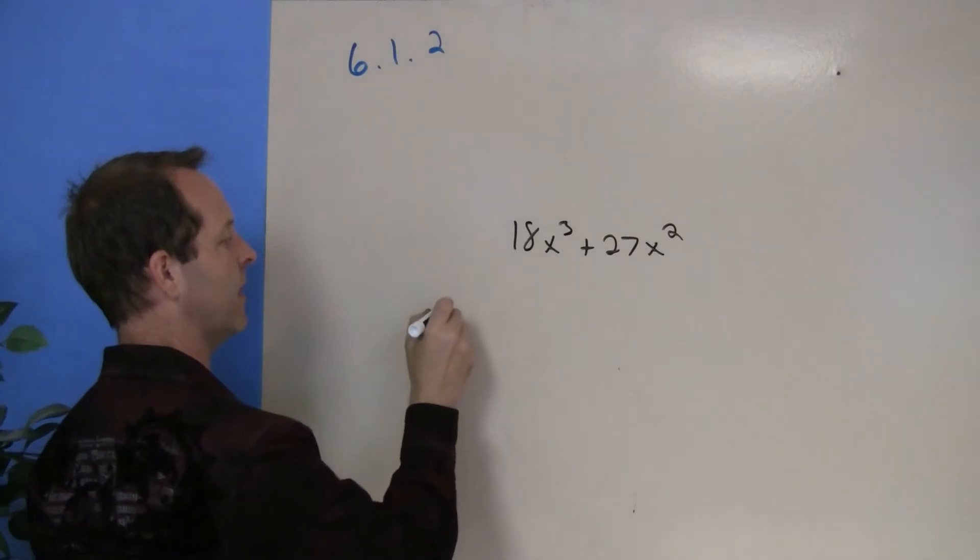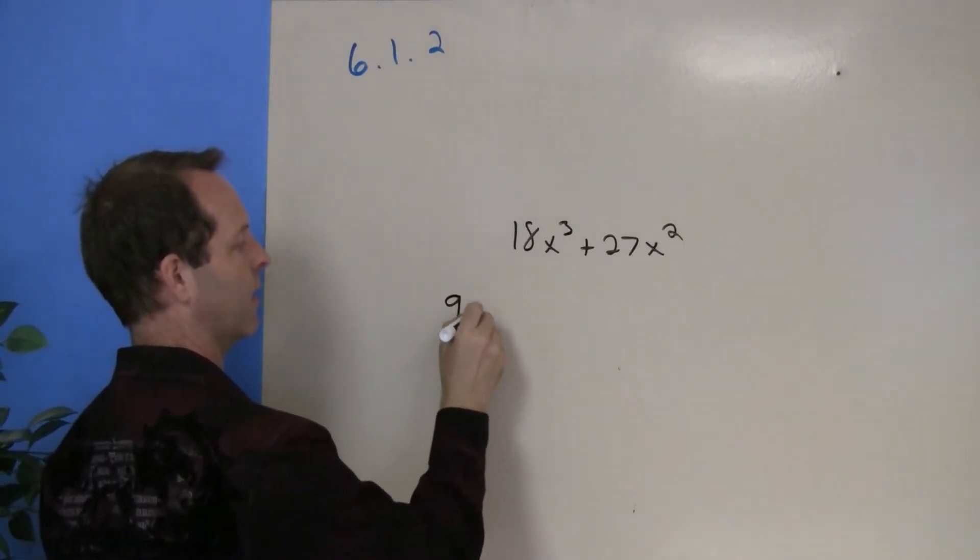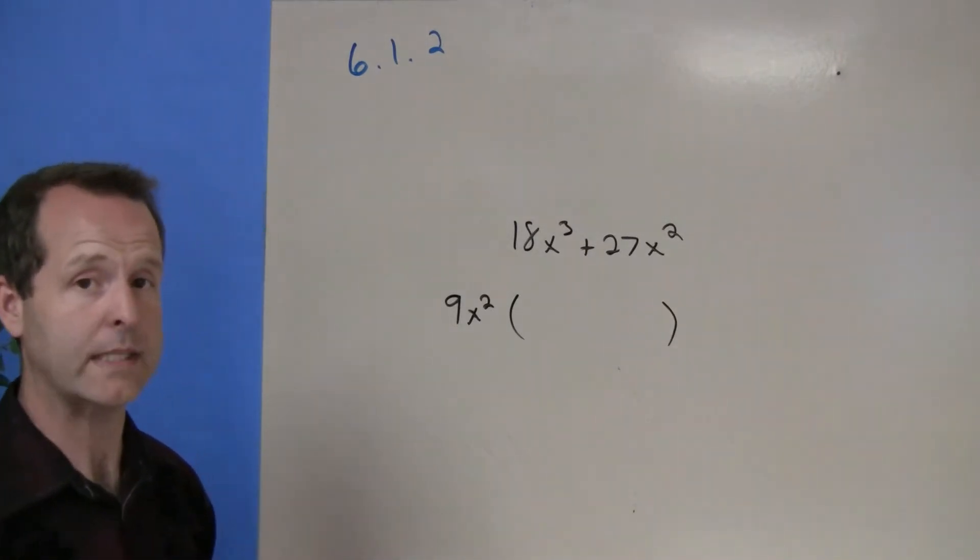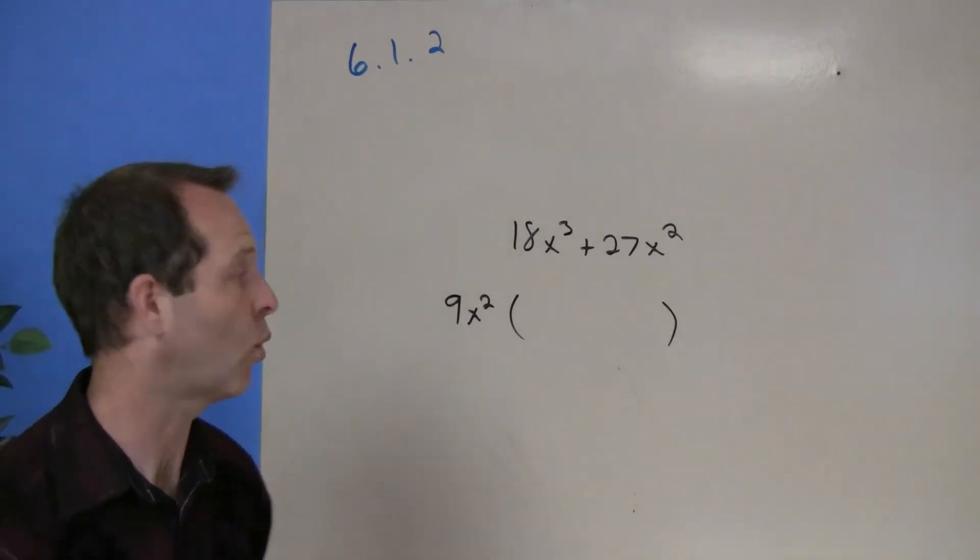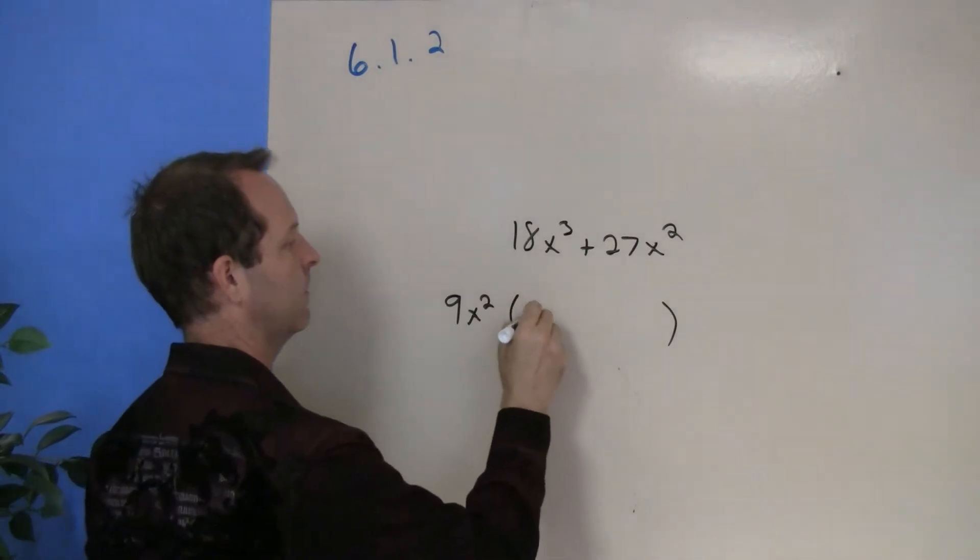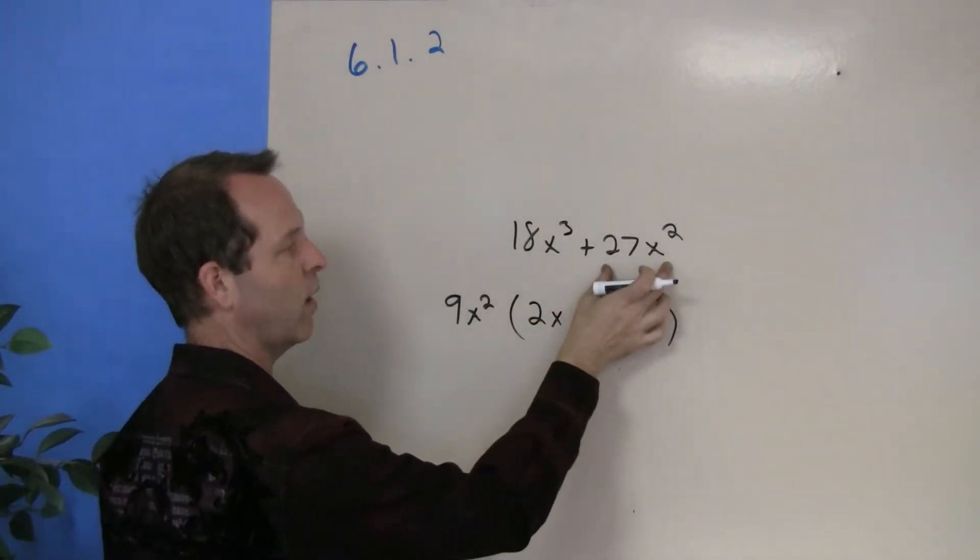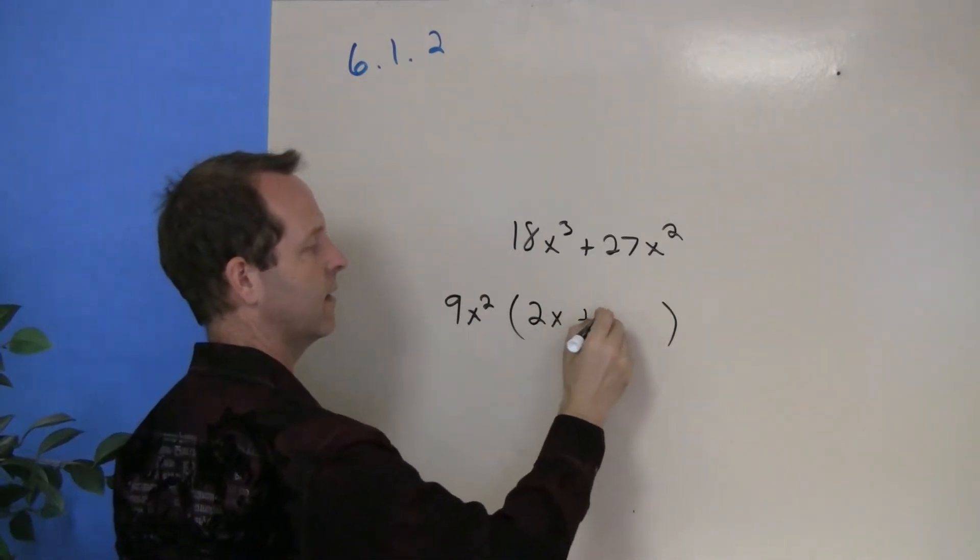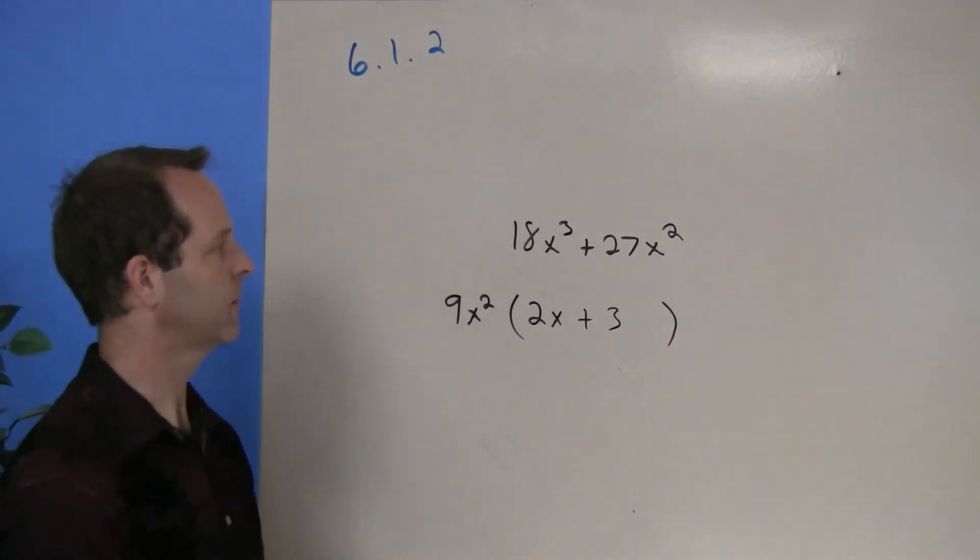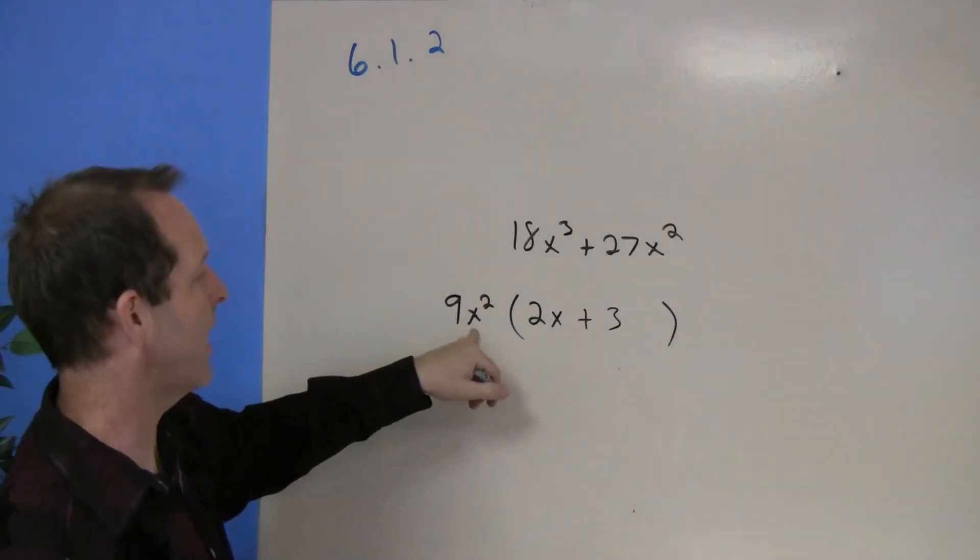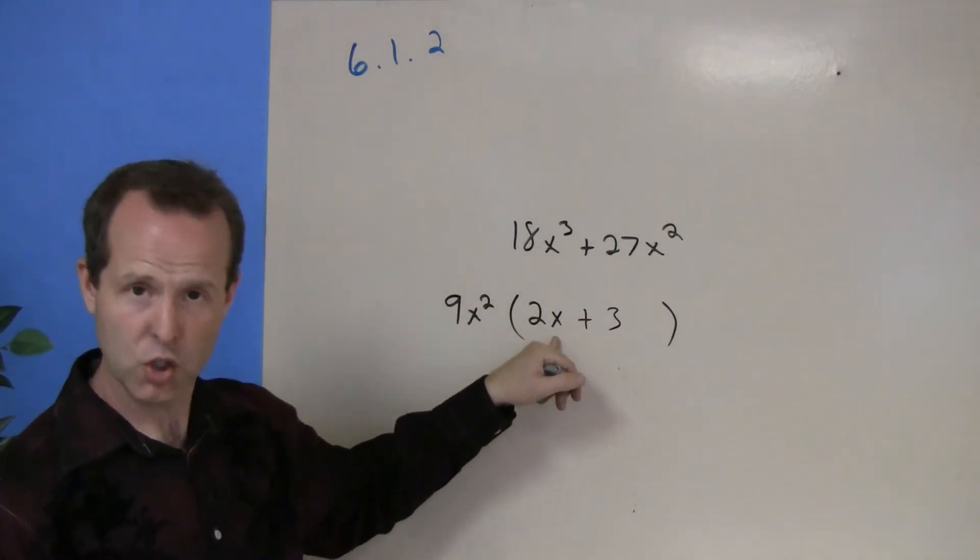The greatest common factor appears to be a 9x². And then what's left, and notice that I'm putting parenthesis around what's left. That's very important. So what's left is a 2x, and then a 9x² factored out of this is left with a 3. So 18x³ + 27x² is the same thing as 9x²(2x + 3).